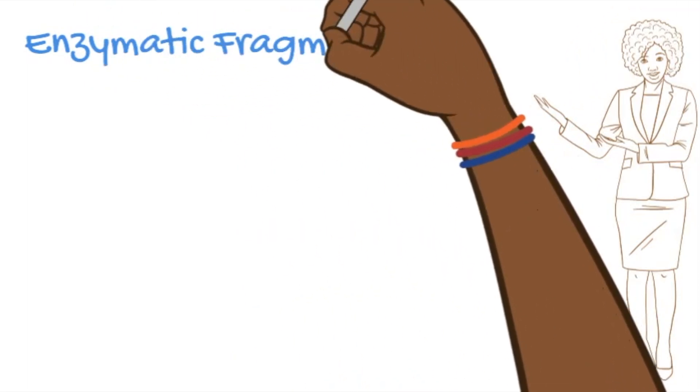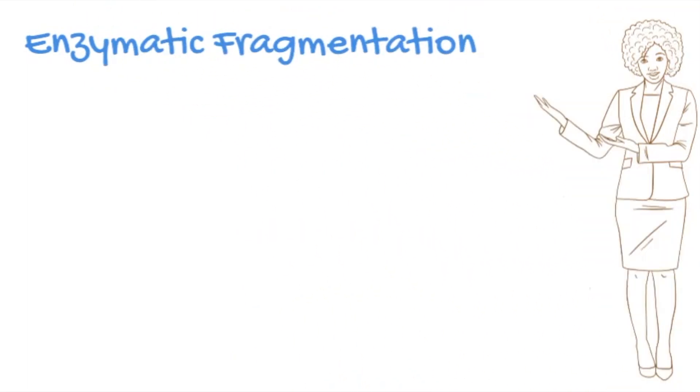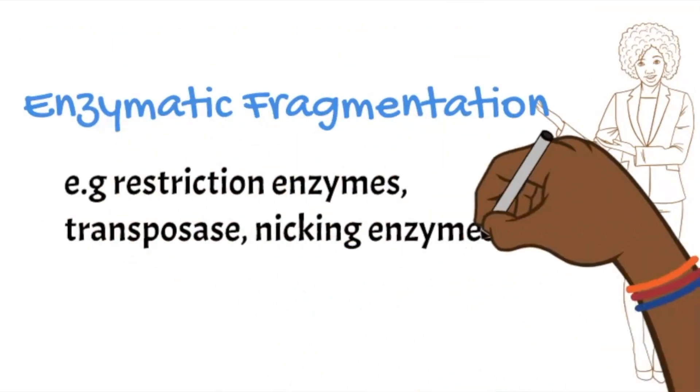You have three choices for fragmenting the DNA. One, use enzymes that recognize specific nucleotide sequences and subsequently cuts them. These enzymes like restriction enzymes, transposases or nicking enzymes.